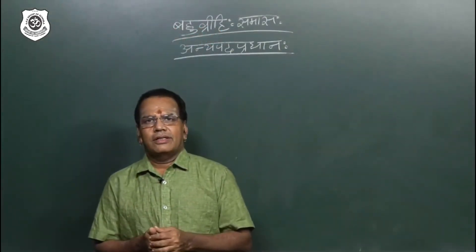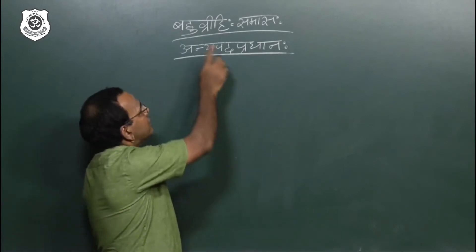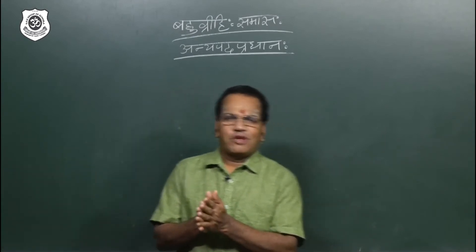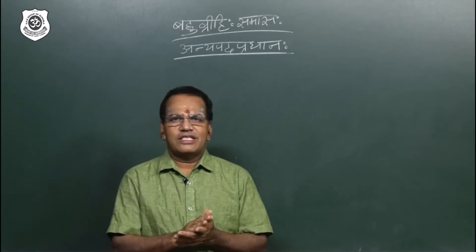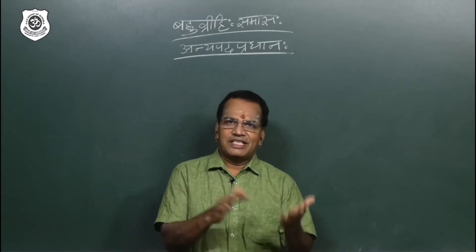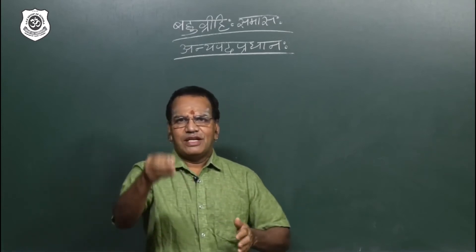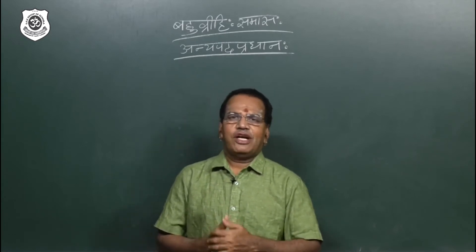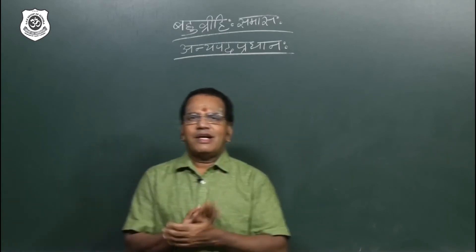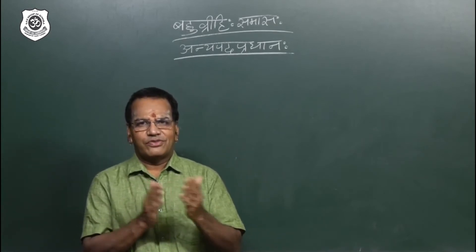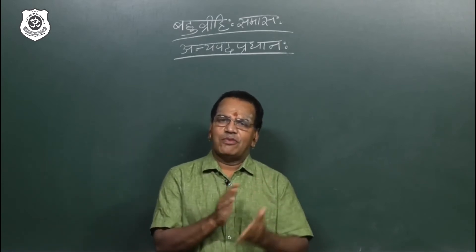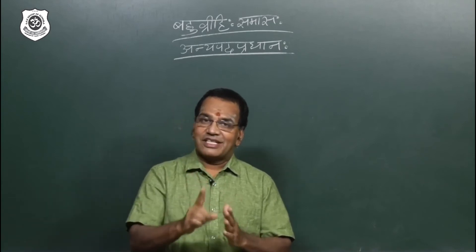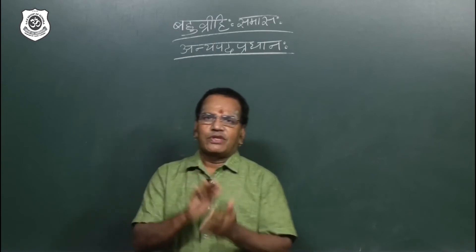My dear students, the next compound is Bahuvrihi Samasa. First, let's recall: in Tatpurusha, the first word goes to a different vibhakti, and when you form the compound, the first word drops its linga, vibhakti, and vachanam and joins with the second word according to sandhi. We also discussed Dvandva Samasa: one plus one makes two, one plus one plus one makes three, with the last word in dvivachanam or bahuvachanam. We discussed three types: Dvandva, Samaharadvamdva, and Ekashas.